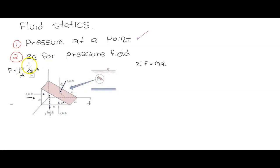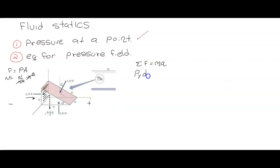We need to multiply pressure times area for units to work out: Newton per meter squared times meter squared gives us Newtons. That's why we have pressure in y times the differential area — the differential element in s and the differential element in z. There is nothing else in the positive direction.